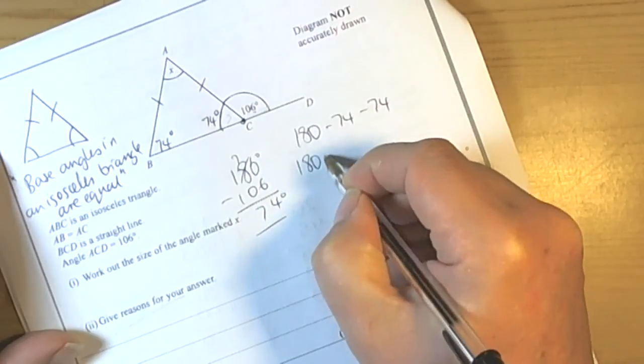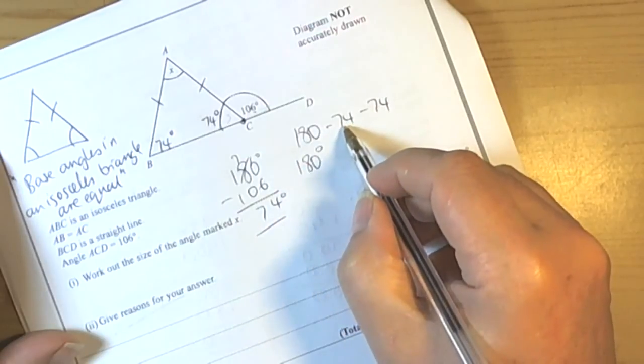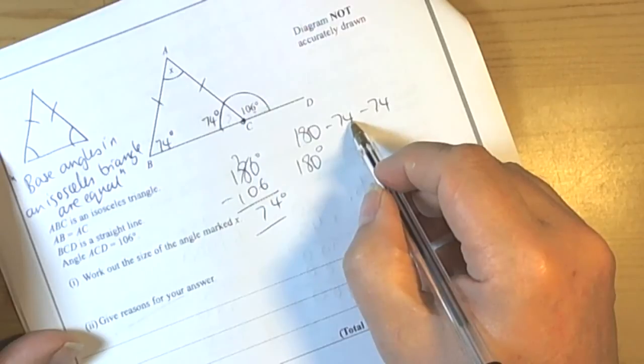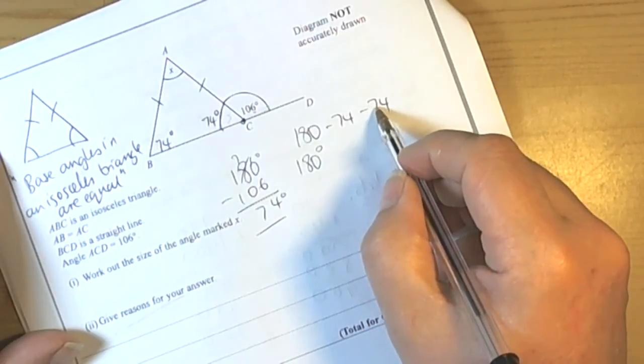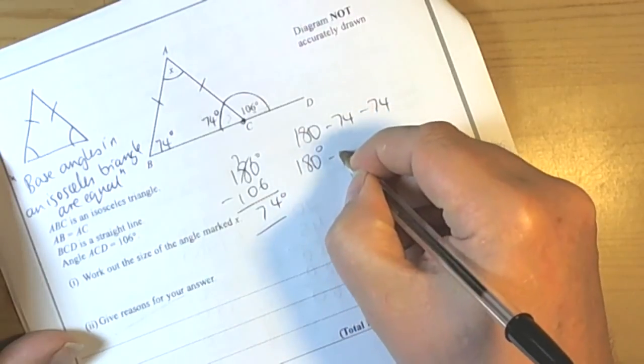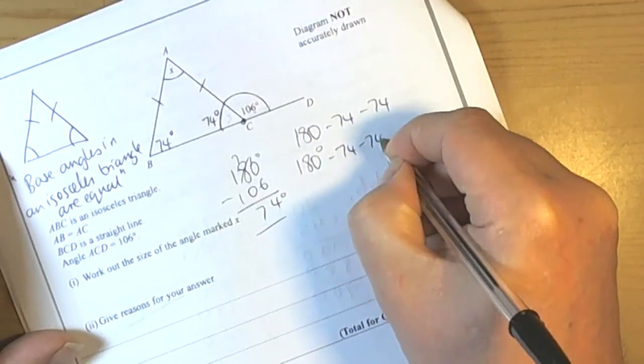Well, what I would do is 180 take away 70, so 110 take away 4 is 106. Take away 70 is 36, take away 4 is 32. So it's going to be 32.